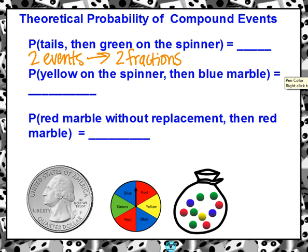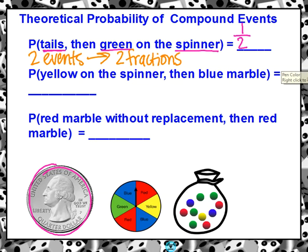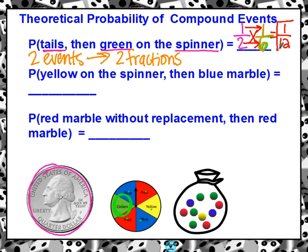The first event says the probability of the coin landing on tails. If you look down here, this is a regular old quarter. So the probability of that quarter landing on tails is one out of two — that's our first event. Then it says green on the spinner. One of these is green out of six. So we have our two events: one out of two and one out of six. The way that we find compound probability is we multiply them. Top times top, which is one, and bottom times bottom, which is 12. So the probability of flipping the coin landing on tails and then spinning green is one twelfth — that would be our compound probability.